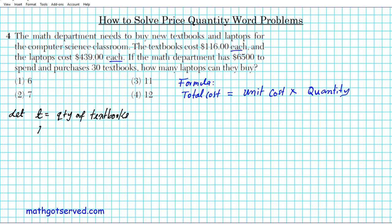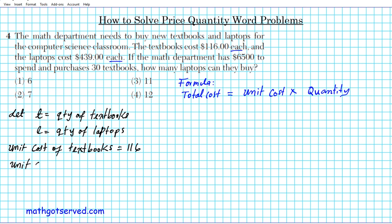Let T equal the quantity of textbooks and let L equal the quantity of laptops, since we have laptops and textbooks as the two items being purchased. The unit cost of textbooks is $116, and the unit cost of laptops is $439. One last thing to note is the total amount spent. The budget or total is equal to $6,500.